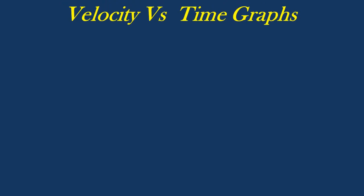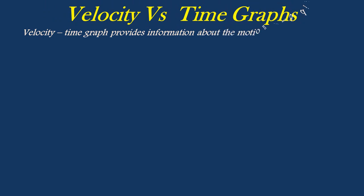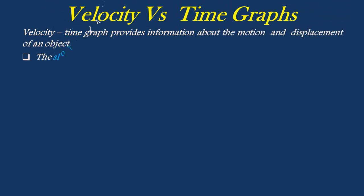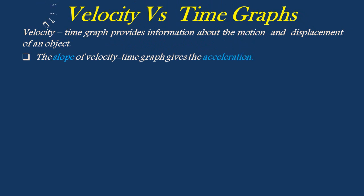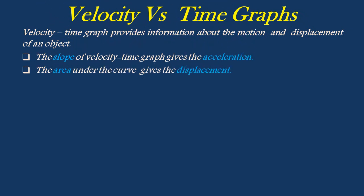Let's now discuss about velocity-time graphs in detail with examples. The velocity-time graph provides information about the motion and displacement of an object. The slope of the velocity-time graph gives the acceleration of the object, while the area under the curve gives the displacement covered by the object.